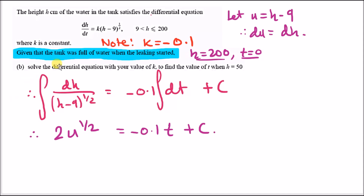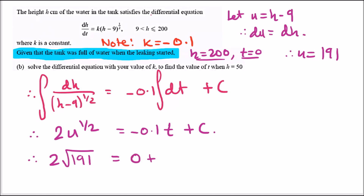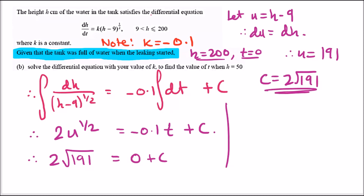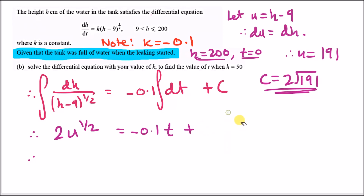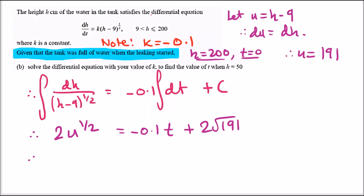Plugging in t equals 0 and h equals 200: u equals 200 minus 9, which is 191. So 2 times the square root of 191 equals minus 0.1 times 0 plus c, meaning c equals 2 root 191. Rewriting the full equation: 2 times the square root of u equals minus 0.1t plus 2 root 191.